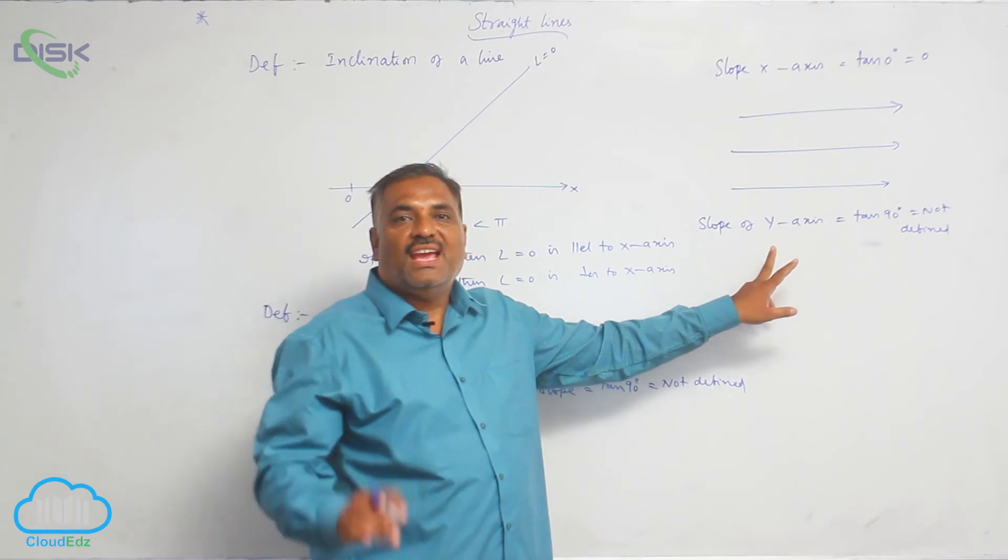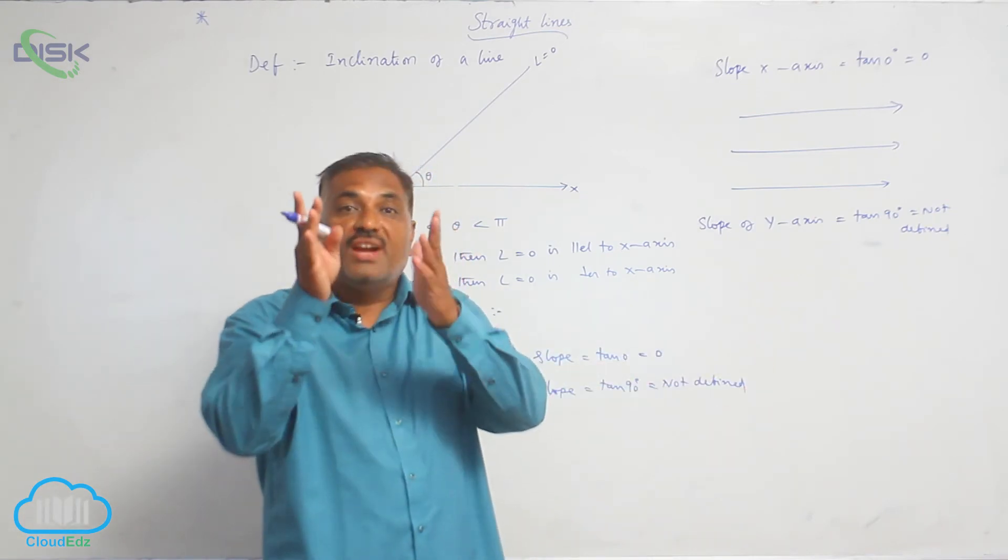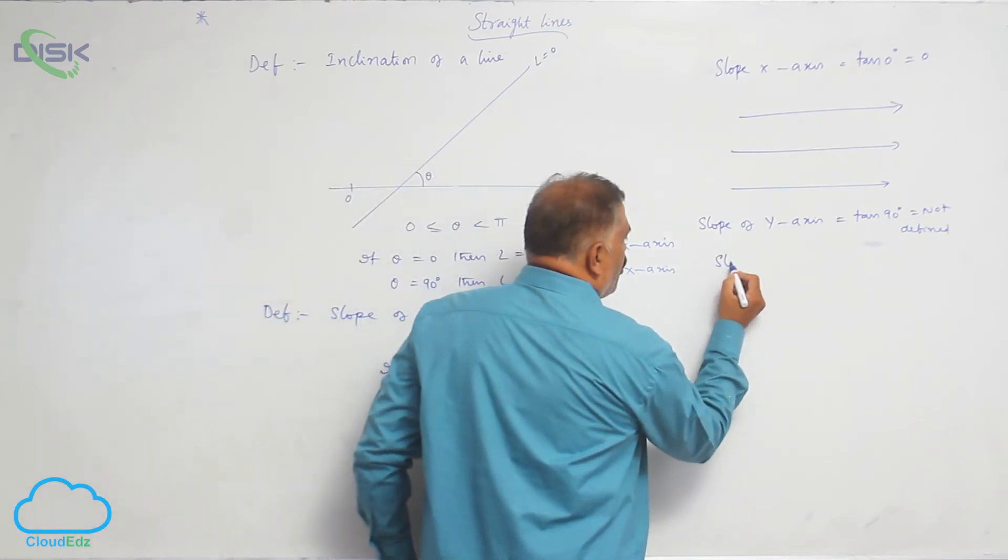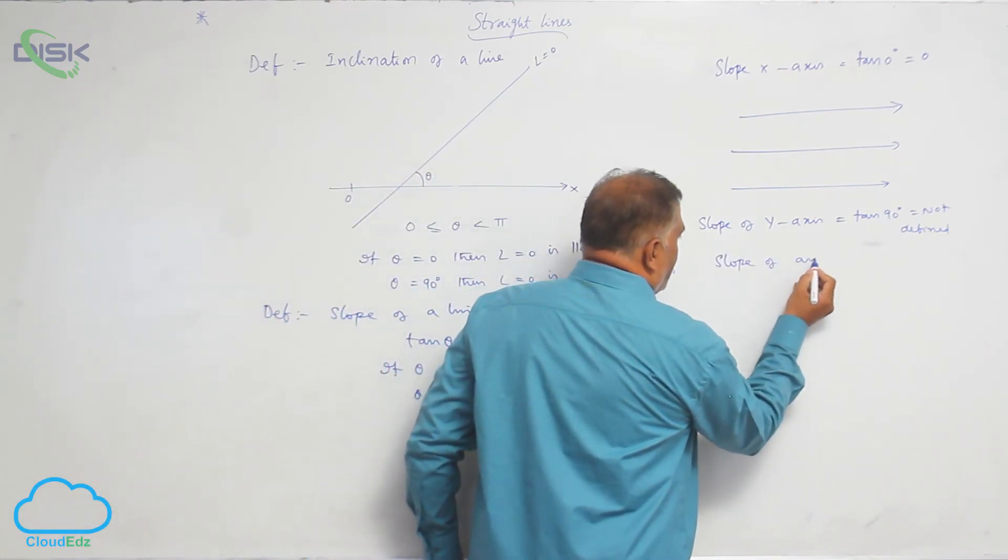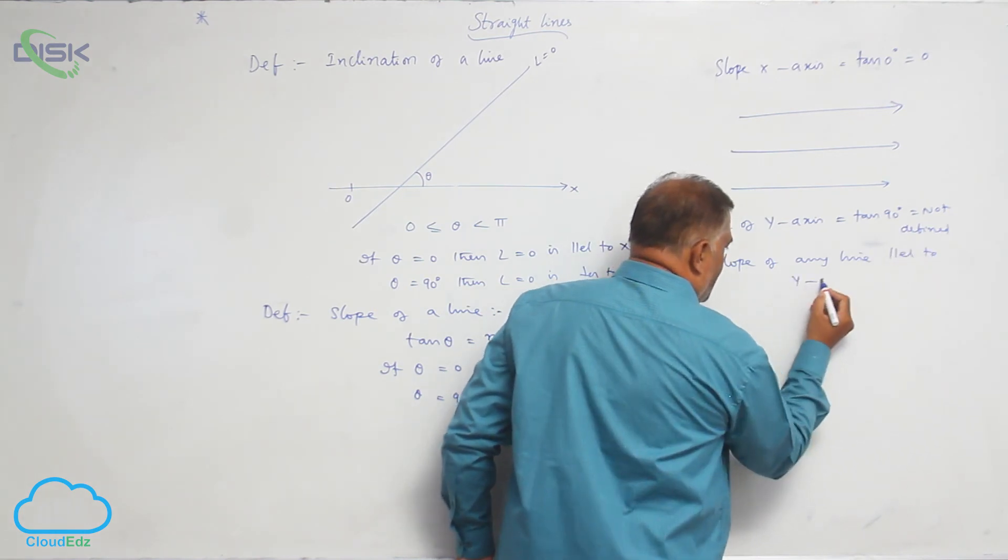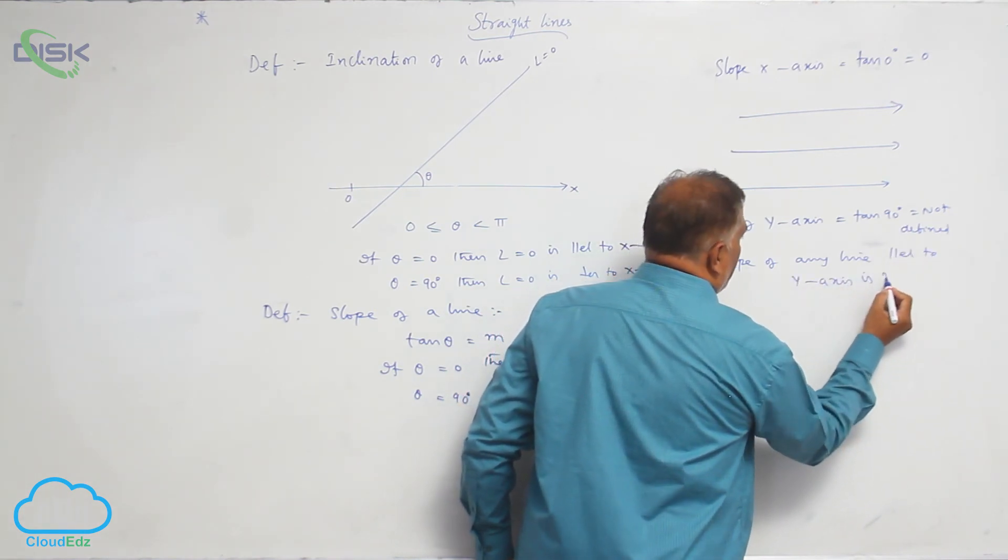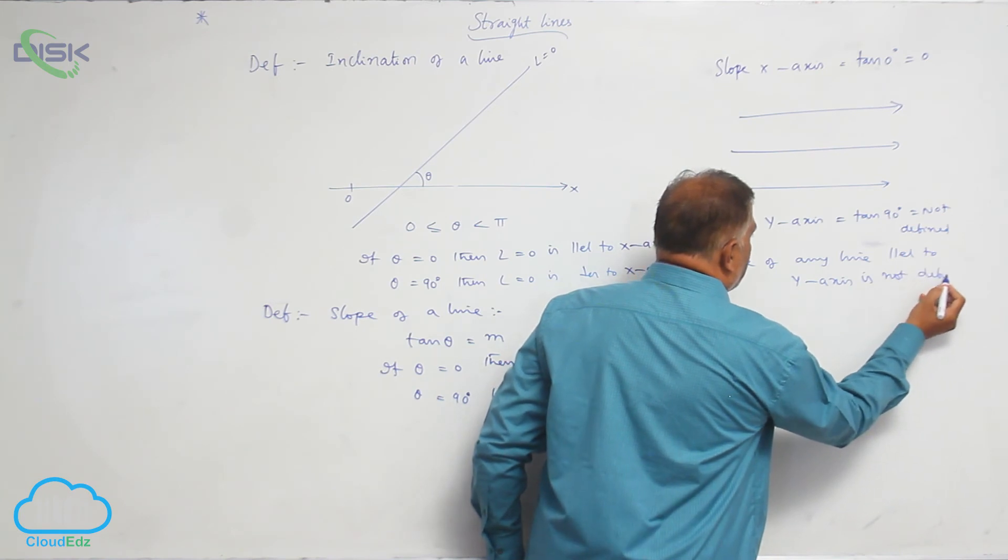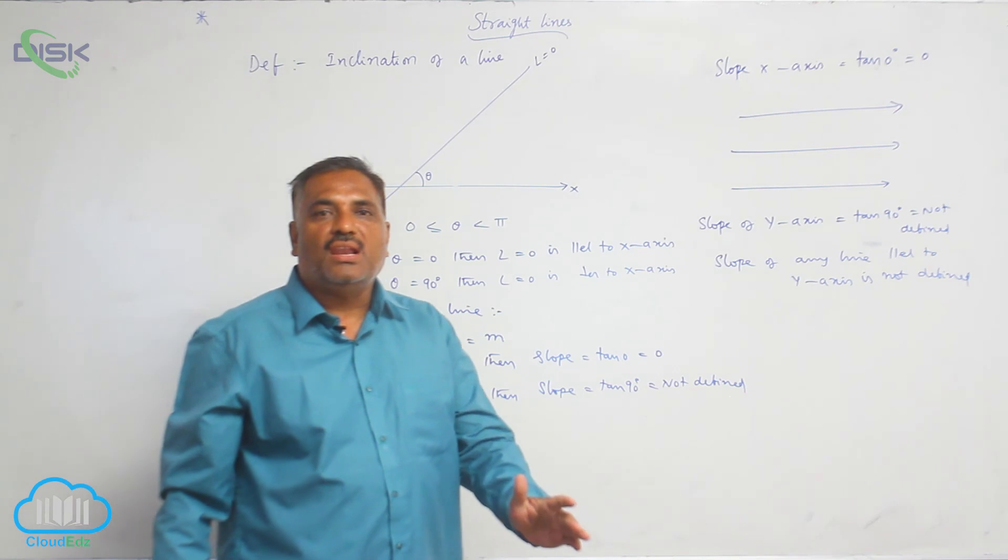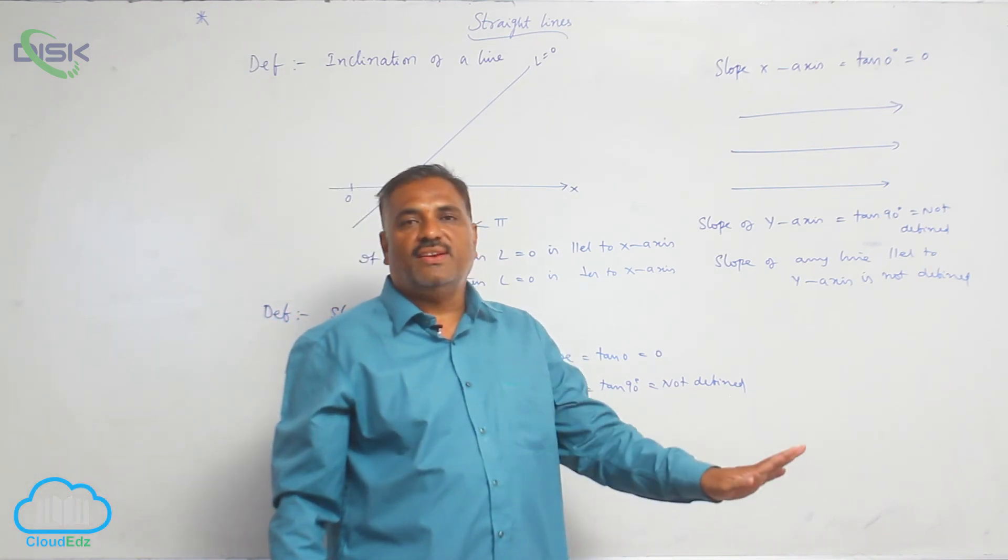Slope of any line parallel to y-axis is not defined. In particular, we can say slope of any vertical line is always not defined.